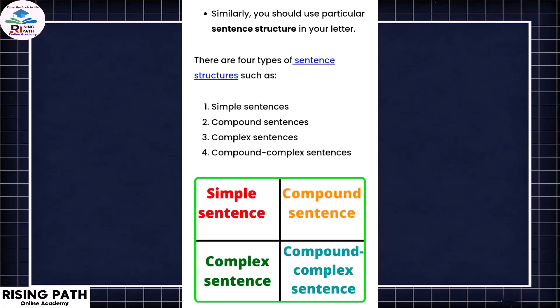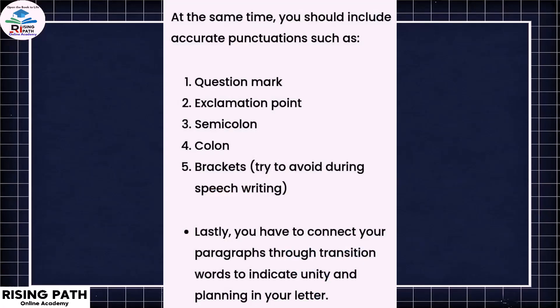There are four types of sentence structure: simple, compound, complex, and compound-complex sentences. You should also include accurate punctuation such as question marks, exclamation points, semicolons, colons, and brackets. Most importantly, you have to connect your paragraphs with transition words and abide by all these rules.